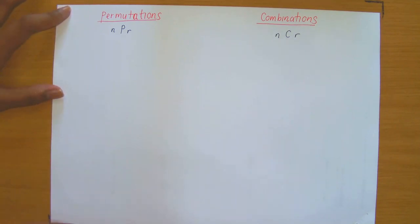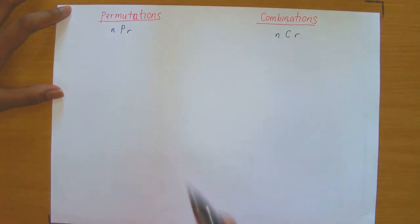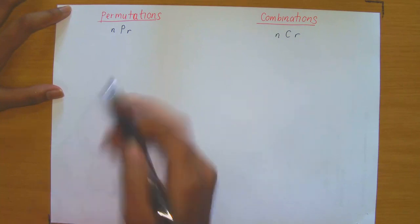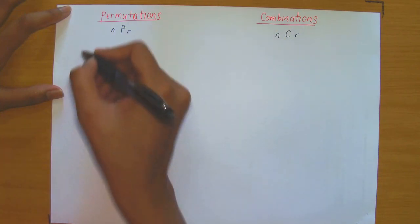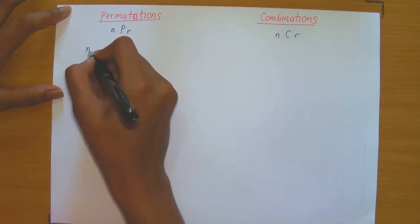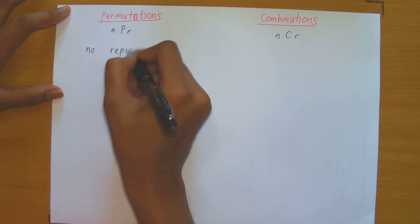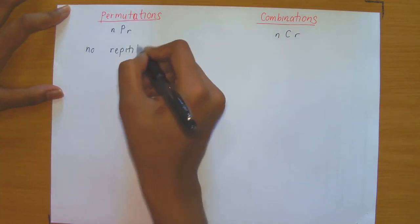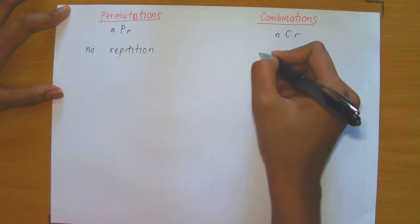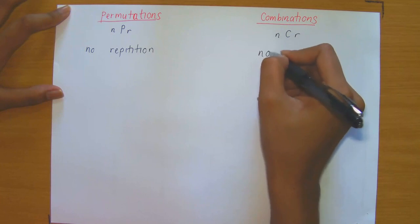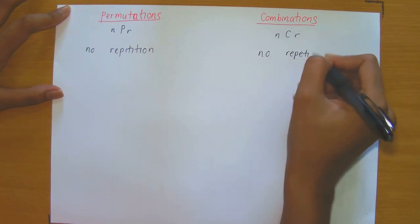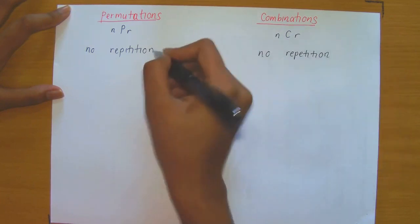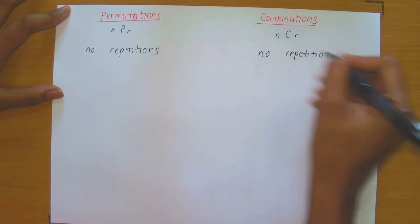It is important to note the conditions under which this selection is taking place. For both permutations and combinations, we require no repetition.